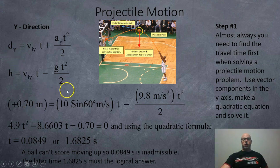The initial velocity up was 10 sin 60 or 8.6603. And the gravity, of course, is still going to be negative 9.8 because we're on the planet Earth. So once again, we get a quadratic function, 4.9t squared, negative 8.6603t plus 0.70 equals 0. And using the quadratic formula, we get 0.0849 or 1.6825 seconds. So now we have two positive times. Which one's right?